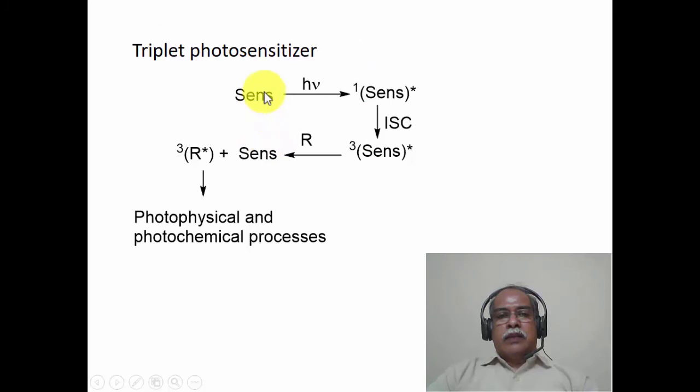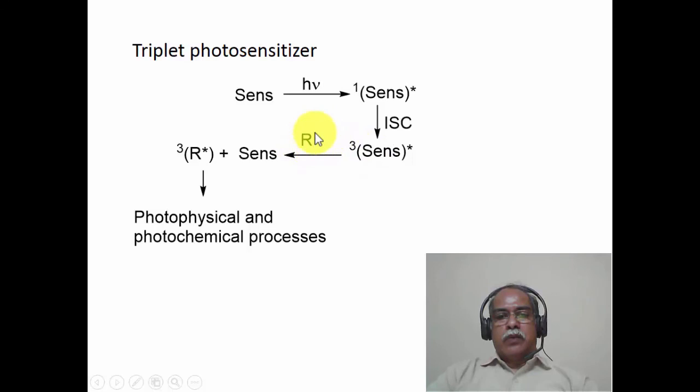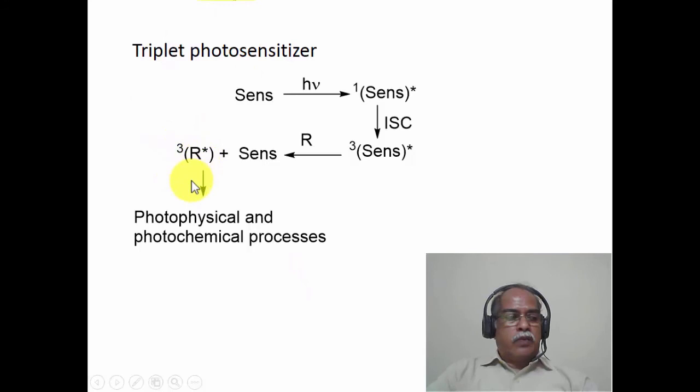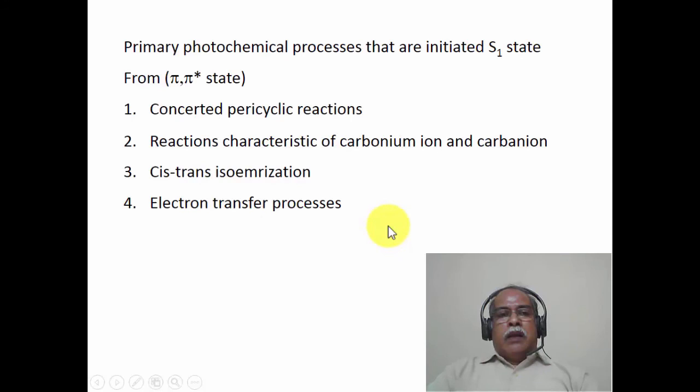The same mechanism applies to triplet sensitizers. The sensitizer undergoes excitation to the singlet excited state, then high-efficiency intersystem crossing produces the triplet excited state of the sensitizer. When it encounters the reactant R, the triplet state of the reactant is produced and the sensitizer returns to its singlet ground state — a spin-allowed process (triplet→triplet energy transfer). Once the triplet state of the reactant is formed, it undergoes photochemical and photophysical processes as appropriate.